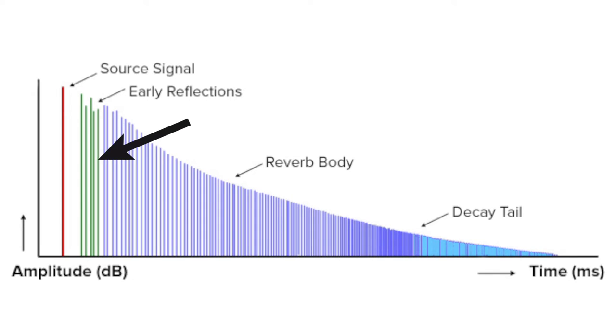Then we have the room. A room is often meant to sound natural, like the instrument or the vocal is inside a room. Chamber is sort of a room by itself, but it's often clearer.